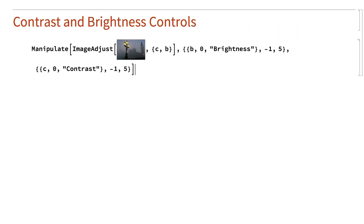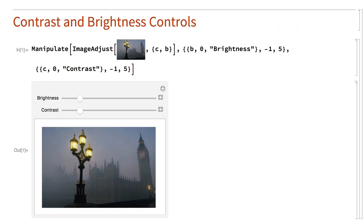Here is a Manipulate with sliders for controlling the brightness and the contrast of a sample image. Contrast is the range of colors in an image, or the range between dark and light. This Manipulate program uses a function called ImageAdjust, which will be described in more detail in a moment, but basically these controls work like the brightness and contrast controls that you might find on a television or on a computer monitor.